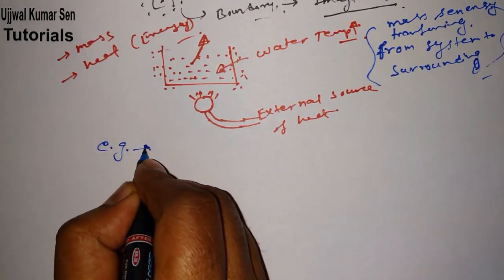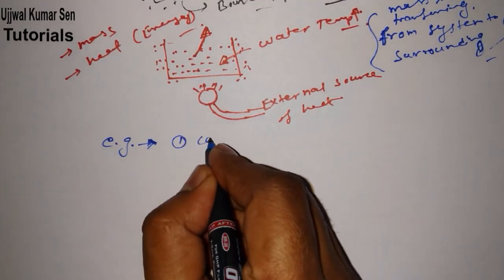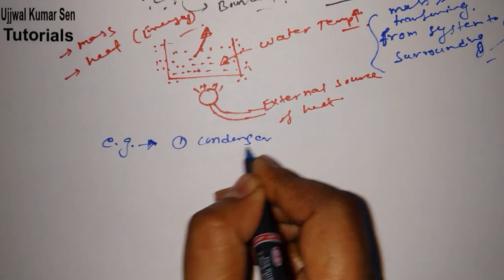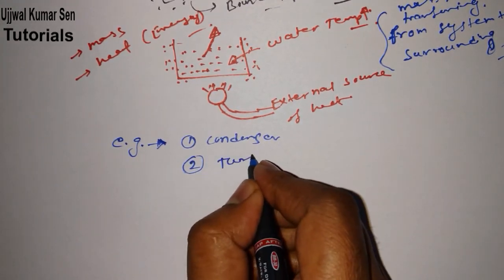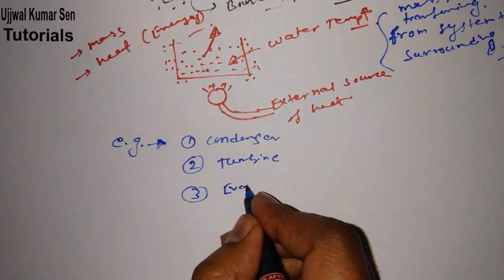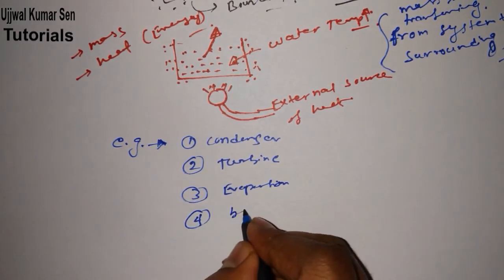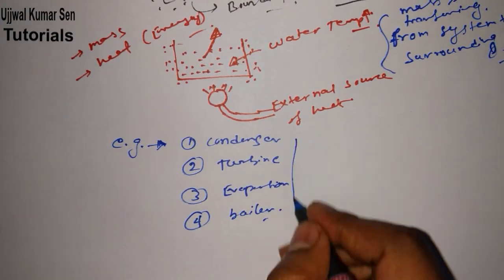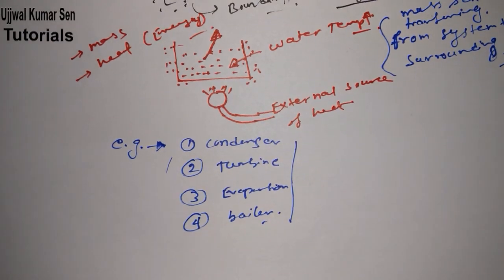Now let me share with you a few examples. What are those examples? Basically, first: condenser. Second, I must say turbine. Third: evaporator. These are all examples. Even boiler is an open system if it is not closed. These are examples of open system.